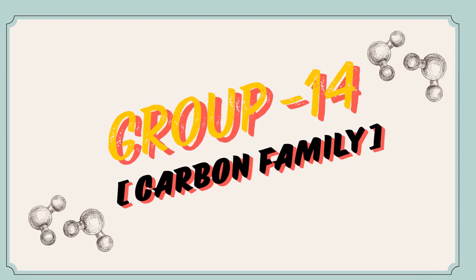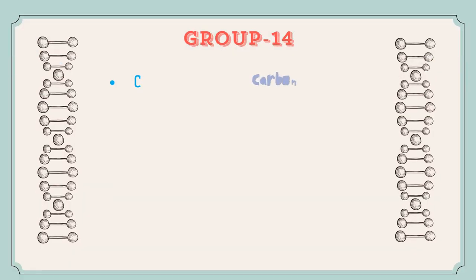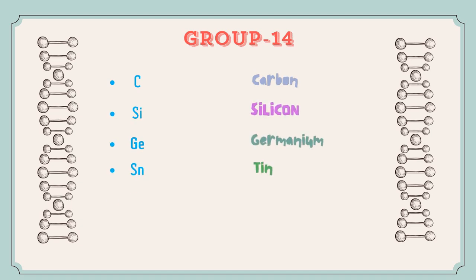Next group is Group 14, that is the Carbon family. The elements are Carbon, Silicon, Germanium, Tin, Lead, and Flerovium.